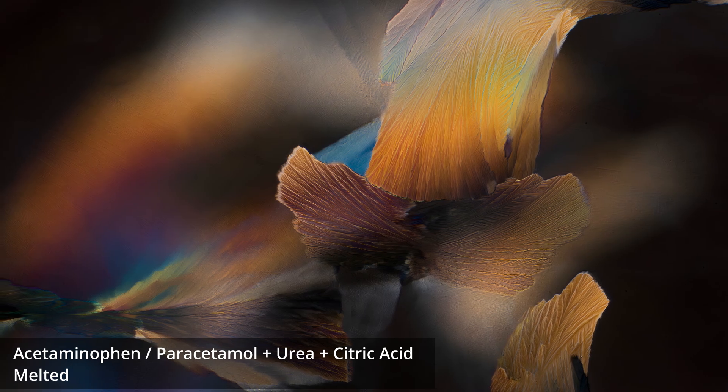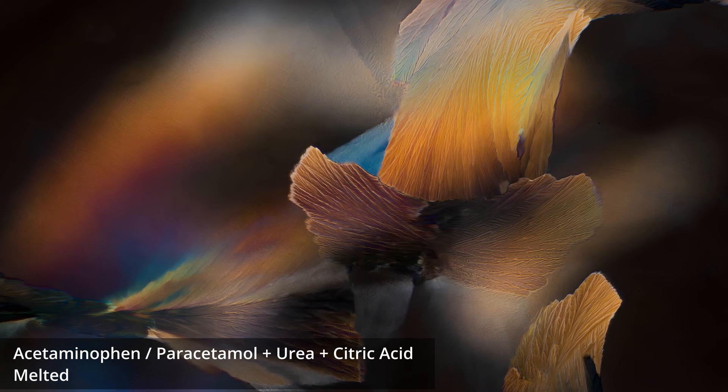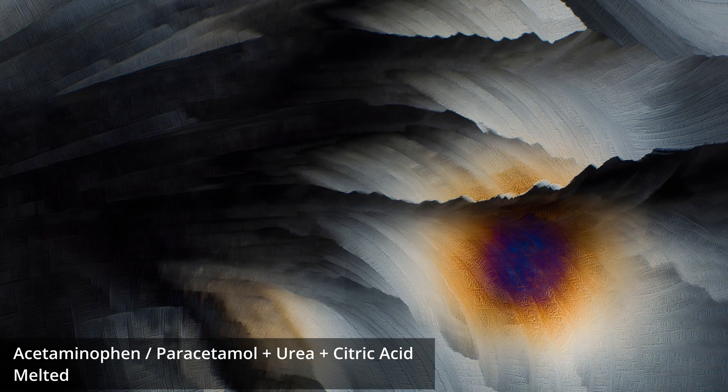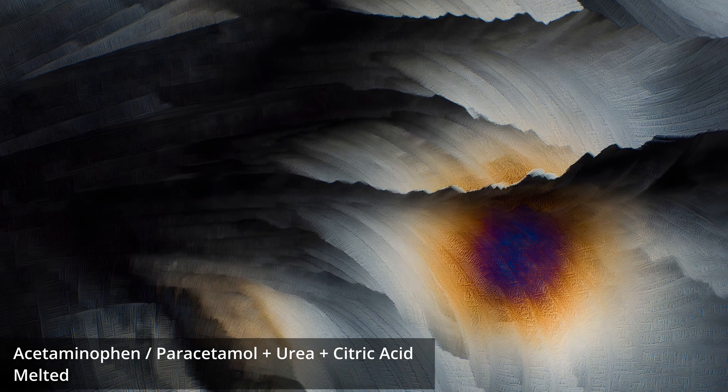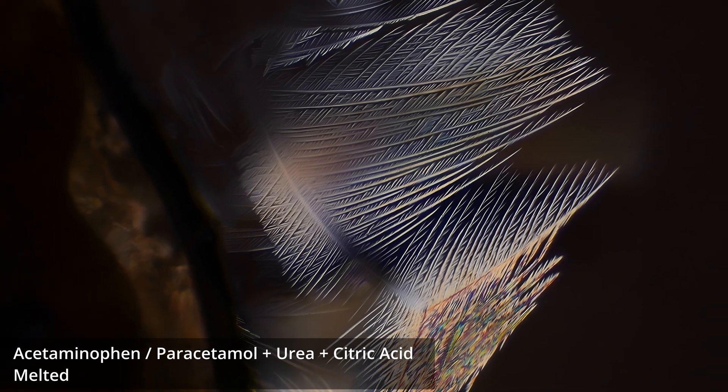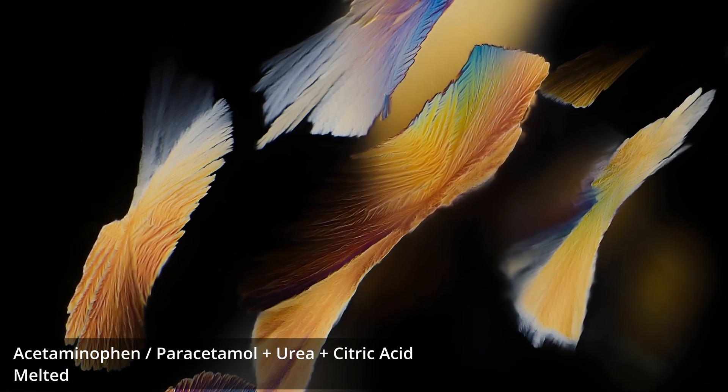Add citric acid to this mixture, and the structures transform again. In a co-crystal, the different molecules fit together in a repeating lattice, linked by hydrogen bonds or other weak interactions, forming a stable hybrid structure.